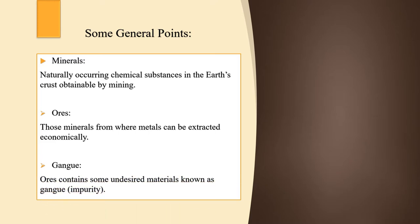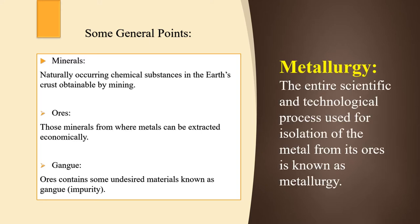Gangue are the impurities present in ores — the undesired materials found in an ore are known as gangue. Next is metallurgy — metallurgy is the entire scientific and technological process used for isolation of a metal from its ore.